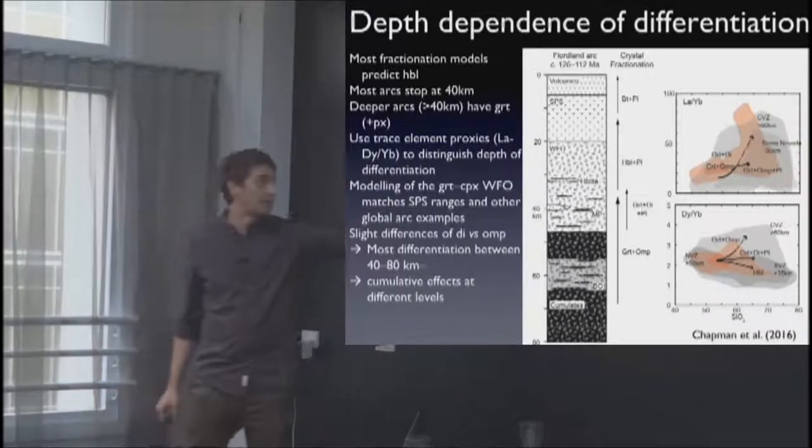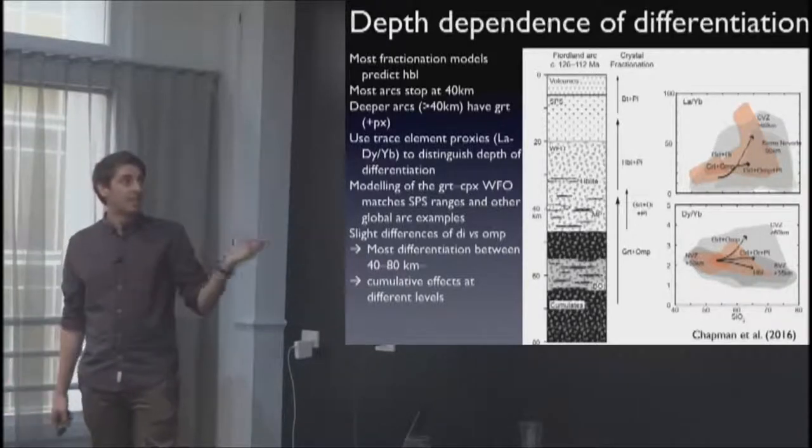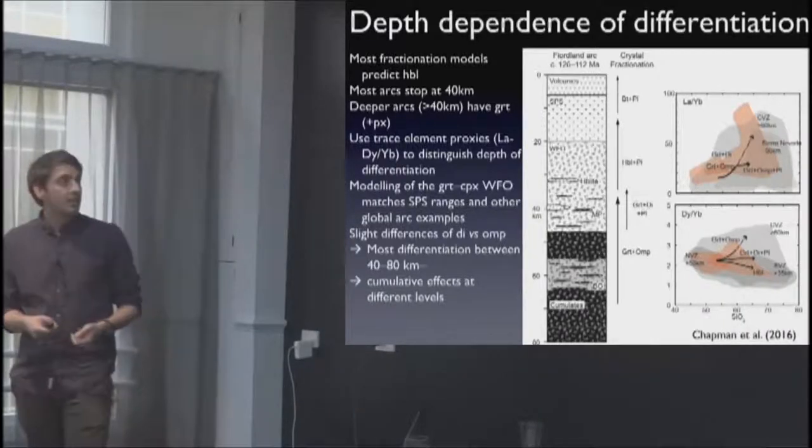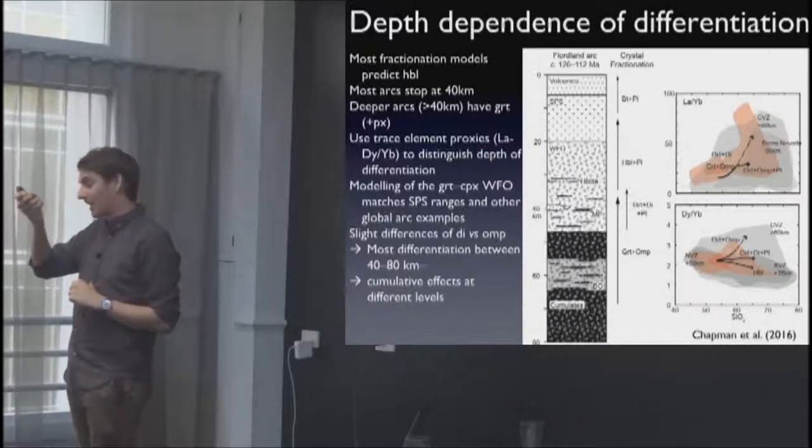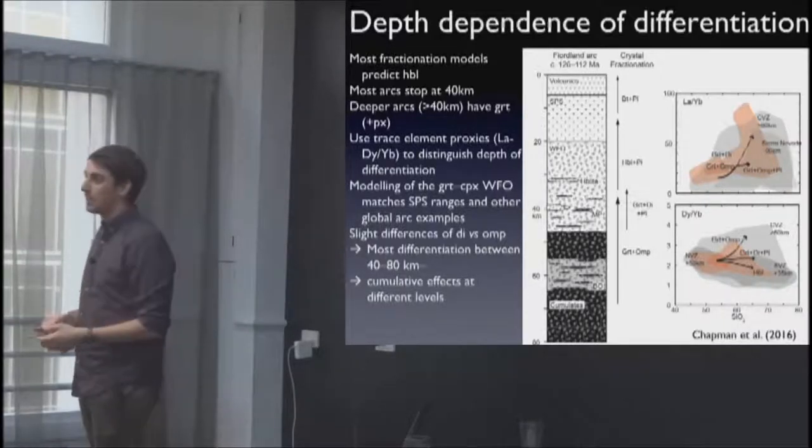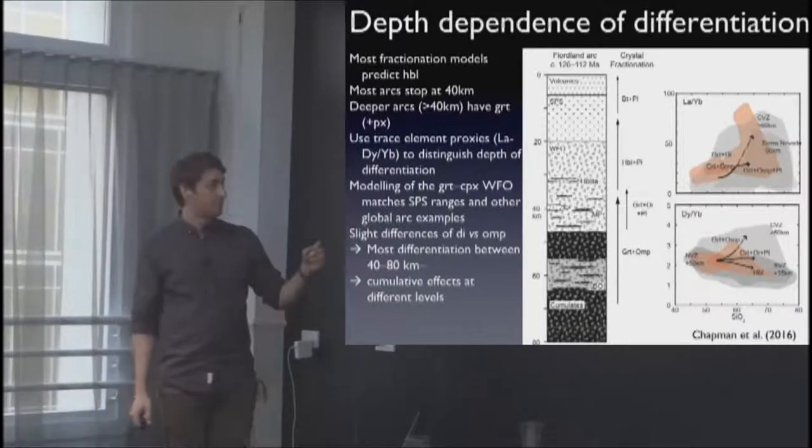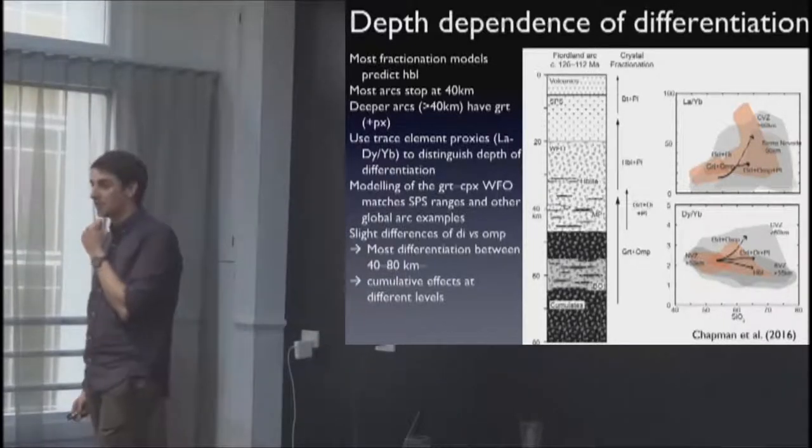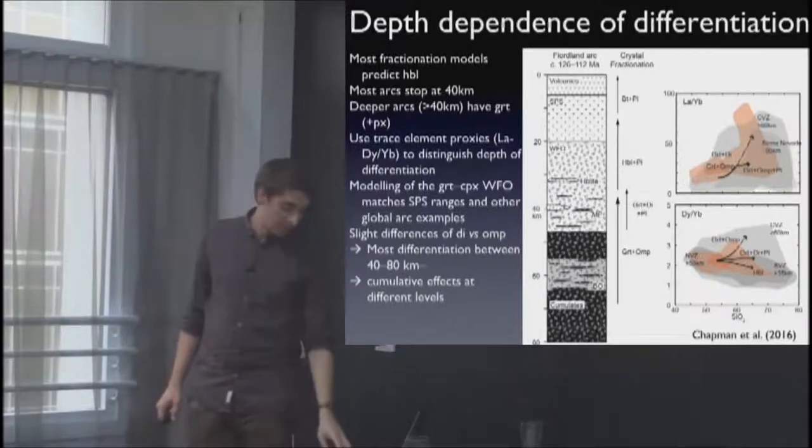The Separation Point Suite is in red. The modelling suggests that most of the trends can be accounted for by garnet-omphacite fractionation and we get cumulative influences from hornblende as the magmas move to shallower levels. There is subtle differences between the effect of diopside versus omphacite in terms of its fractionation influence particularly silica and sodium in driving the magma evolution. In terms of fjordland most differentiation is occurring at depths greater than 40 kilometres and potentially up to 80 kilometres. There are cumulative effects as you go further up sequence.